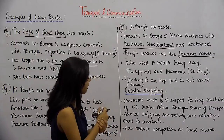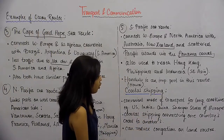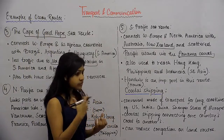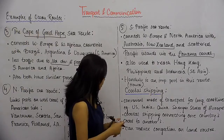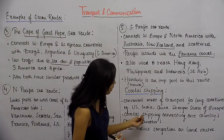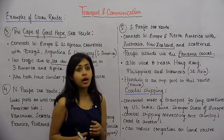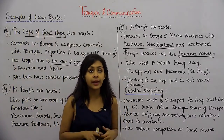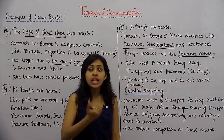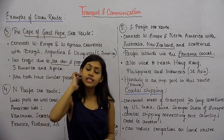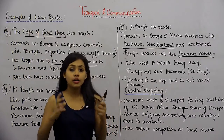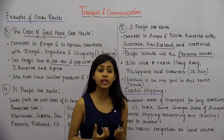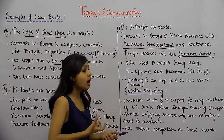Countries that can use coastal shipping include the US, India, China, and the Schengen States of Europe — about 26 states of Europe — which can have internal trade amongst themselves using coastal shipping. Coastal shipping connects one country's coast to another. For example, Latin American countries facing the coastline of African countries. Countries with long coastlines can use coastal shipping with other nearby countries.